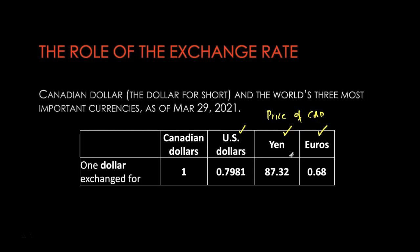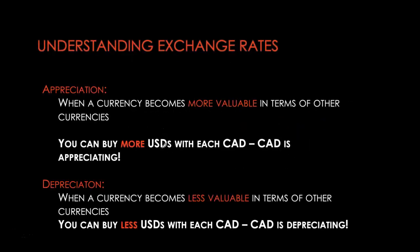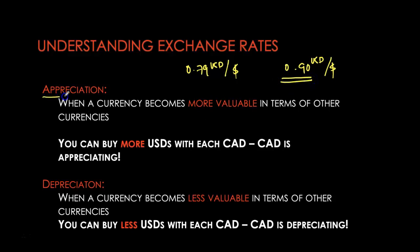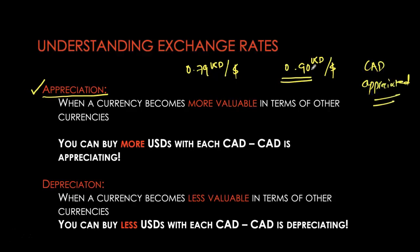What happens when a currency gains value? An appreciation of a currency is when it becomes more expensive. For example, if the exchange rate for the Canadian dollar was 0.79 US dollars per Canadian dollar today and tomorrow it becomes 0.90 US dollars per Canadian dollar, each Canadian dollar is now more expensive — it is appreciating. Whenever one currency appreciates, the other must be depreciating. We often use 'strengthening' as a synonym for appreciation and 'weakening' as a synonym for depreciation.